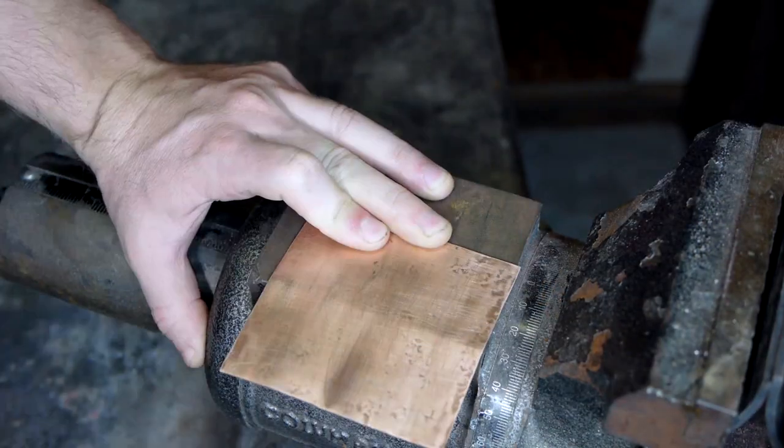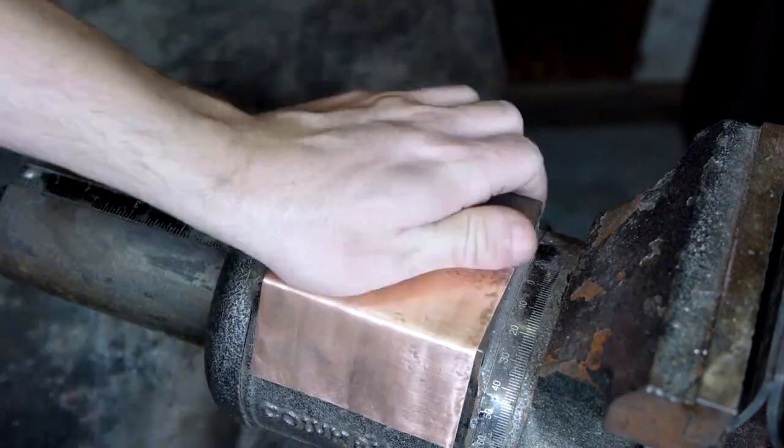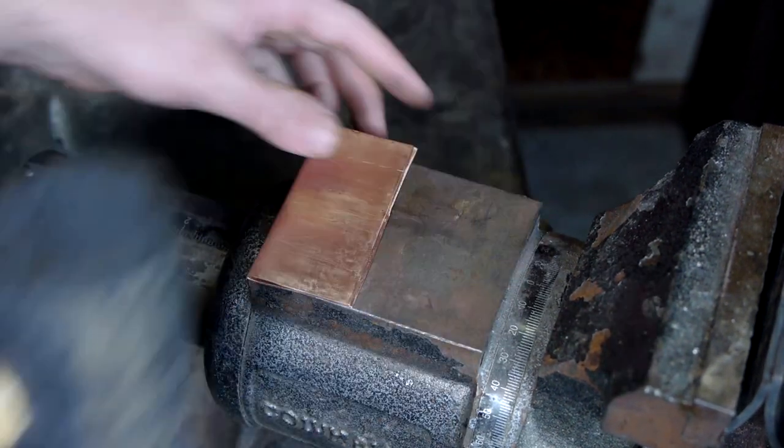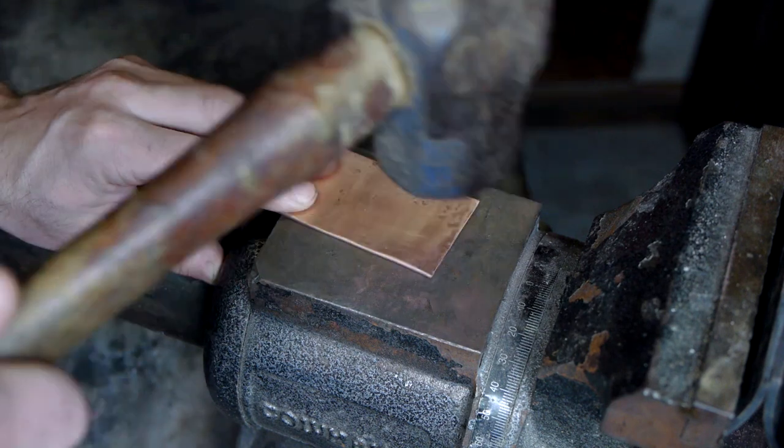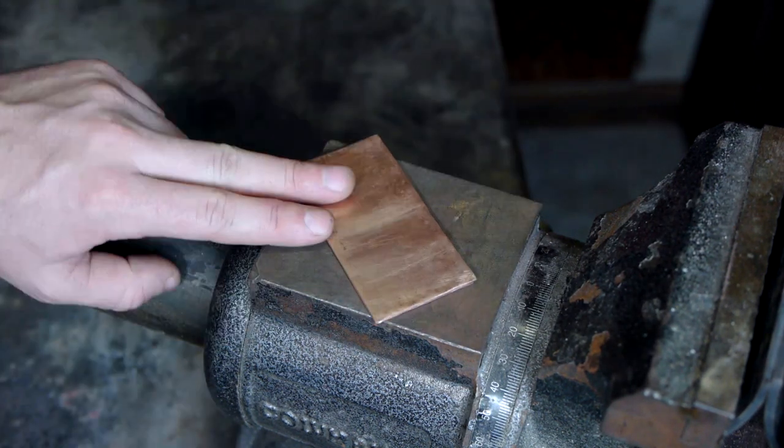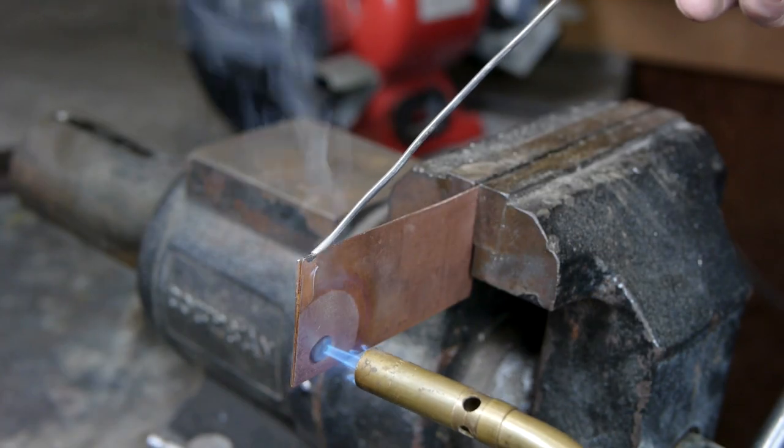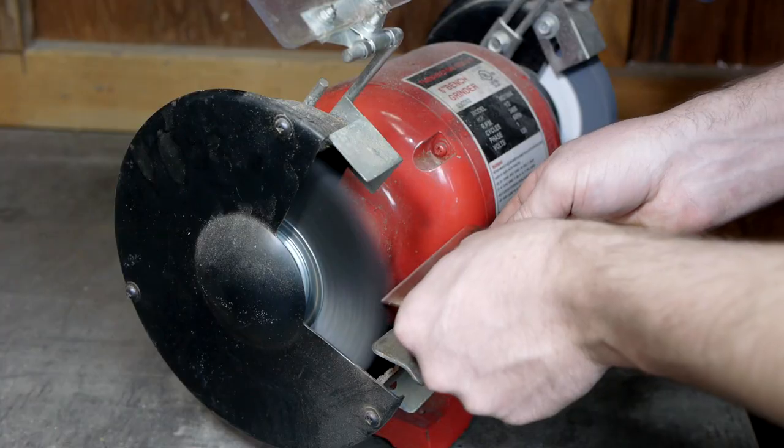I'd like this sheet to be doubly strong, so once flat, I folded it into two layers. Some solder was used to hold the layers together, and it was then cleaned up on my wire wheel.